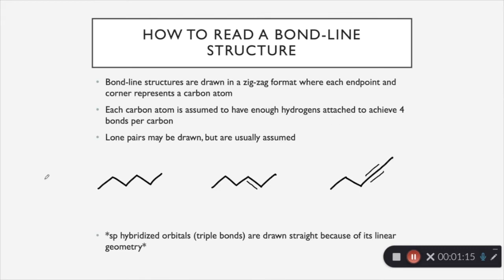So how to read a bond line structure. They are represented in a zigzag format, where each endpoint and corner represents a carbon atom. So you can see right here, here's an endpoint, so that would be 1, 2, 3, 4, 5, 6 carbons.